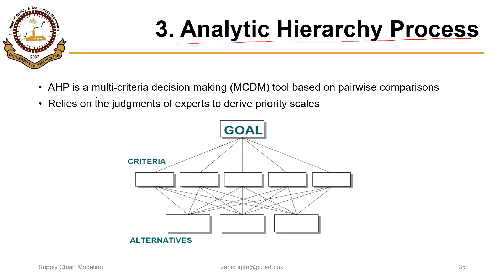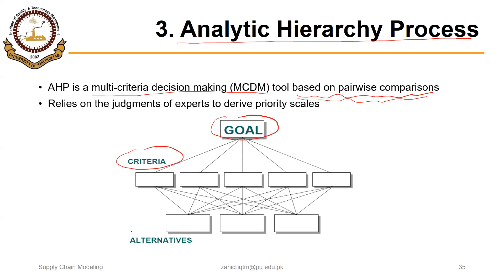AHP is also a multi-criteria decision making tool and it is based on pairwise comparisons. It relies on the judgments of experts to derive priority scales. It has at least three levels of decision making: first we have goals, then we have criteria, and finally we have alternatives. Sometimes we can have sub-criteria as well. We first define the goal, then the criteria, and finally the alternatives.